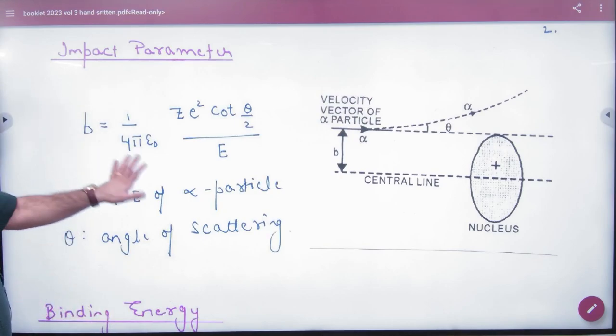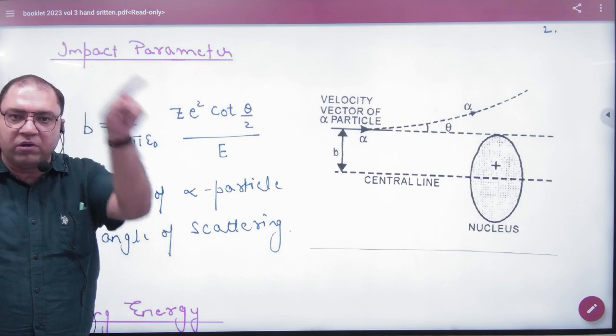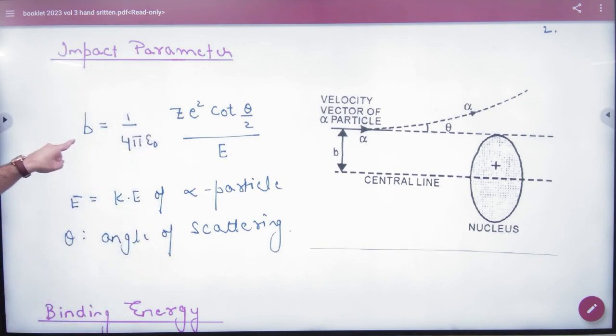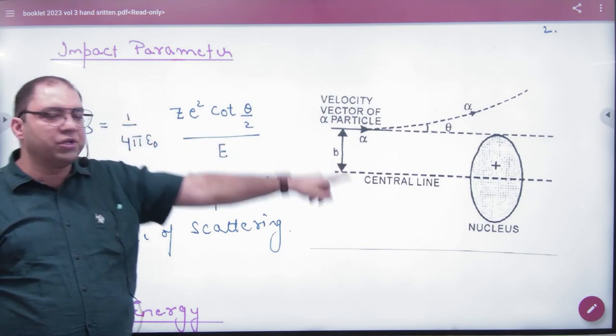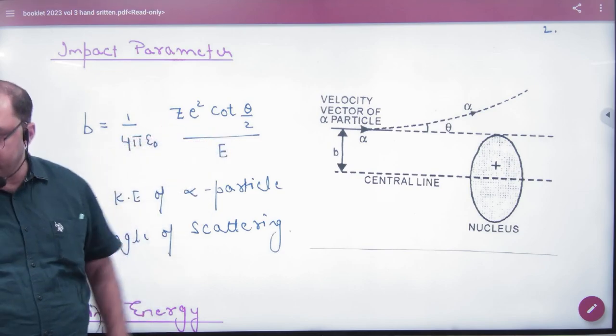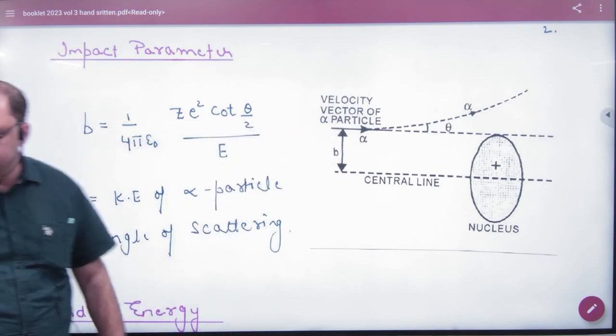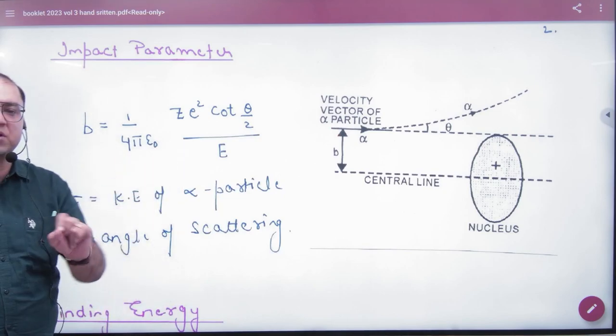This is the formula to calculate the impact parameter. Impact parameter B equals 1 by 4πε₀, into Z (atomic number), E squared, cot of θ by 2 (θ is angle of deflection), divided by E (energy of alpha particle).